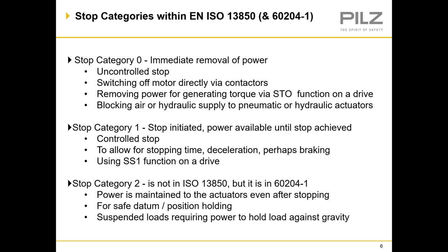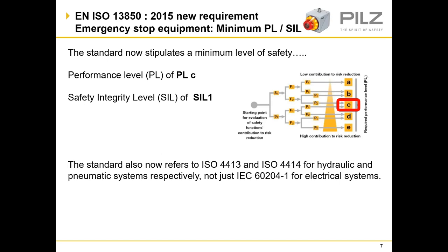Moving on to the new requirement relating to the functional safety standards. This new inclusion into EN ISO 13850 refers to the minimum performance level and safety integrity level requirements for an emergency stop: a performance level of C, or a safety integrity level of 1. The risk graph from Annex 1 of EN 13849 part 1 is referenced because of this introduction of a minimum safety level for e-stops — performance level C using 13849, or SIL 1 using 62061. Standard 13849 is most commonly used by manufacturers of machinery rather than 62061, which is mainly for the process industry.